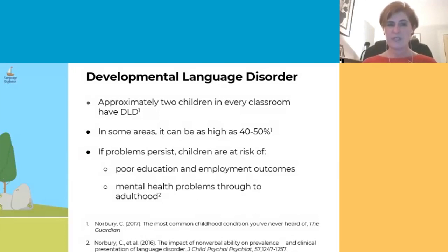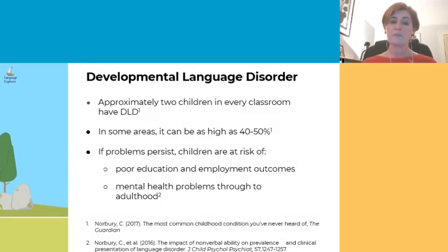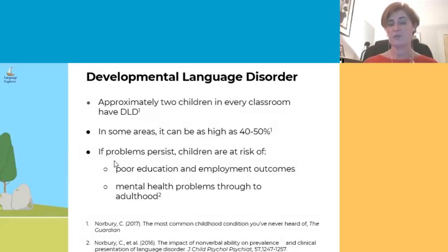Children with DLD are at substantially increased risk of poor outcomes in education, employment, relationships and mental health, but ultimately more than half of children with DLD are not identified and so do not receive any additional support.